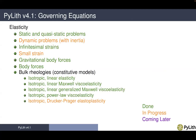Now I'm going to give an overview of the major features of PyLith version 4.1. We have governing equations in terms of elasticity with static and quasi-static problems; dynamic problems with inertia are in progress. Infinitesimal strains are available; the small strain formulation is in progress. We have gravitational body forces as well as general body forces throughout the domain. We have bulk rheologies — constitutive models — including isotropic linear elasticity, isotropic linear Maxwell viscoelasticity, isotropic linear generalized Maxwell viscoelasticity, isotropic power-law viscoelasticity, and the isotropic Drucker-Prager elastoplasticity which is in progress.